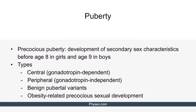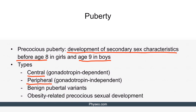Let's talk about precocious puberty. This is the development of secondary sex characteristics before the age of 8 in girls and before the age of 9 in boys. It's divided into several types: central, also known as gonadotropin-dependent precocious puberty; peripheral, also known as gonadotropin-independent precocious puberty; benign pubertal variants; and obesity-related precocious sexual development.